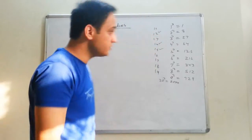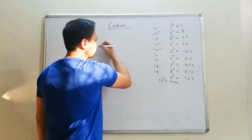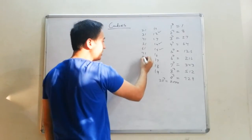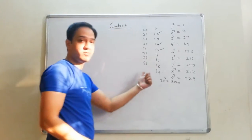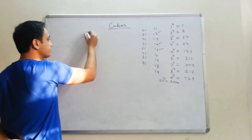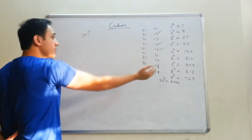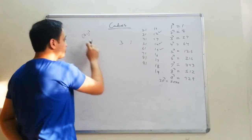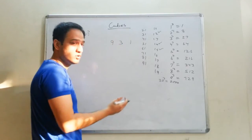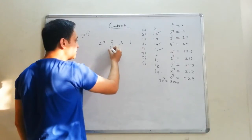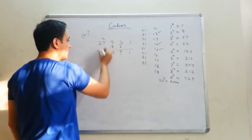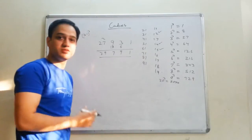There is another easy way to do cubes of numbers ending in 1: 21, 31, 41, 51, 61, 71, 81, 91. For cube of 31, I'll start: 1, then 3. Now square of 3 is 9, cube of 3 is 27. Double these digits: 18 and 6. Add these: the answer is 1, 9, 7, 2, 9, 1. So 29,791 is your answer.